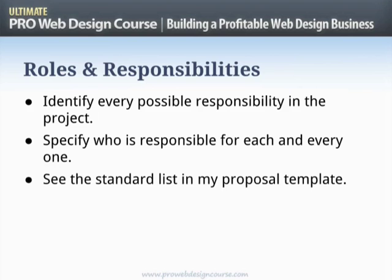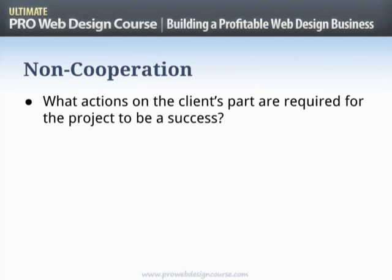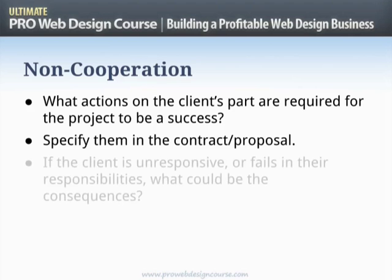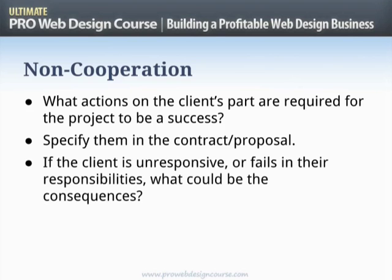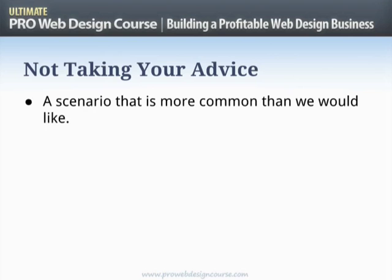Here's a possible exception you need to cover: non-cooperation. If there are actions the client must take for the project to succeed, list them in your proposal. If the client is unresponsive or fails in their responsibility, what are the consequences? Make sure this is covered either in specific cases or via a general clause — for example: if I send you an email specifying something required by a certain date, you must agree to fulfill it in order for the contract to be upheld.